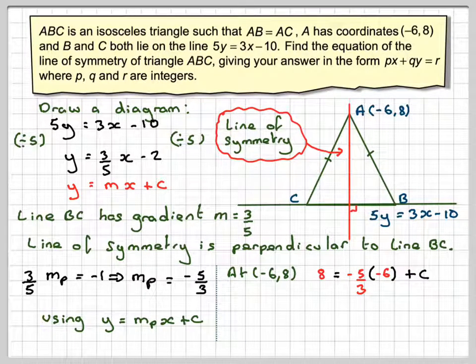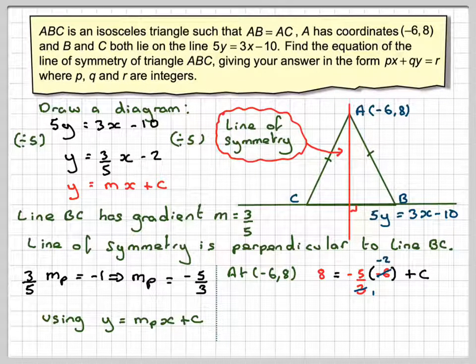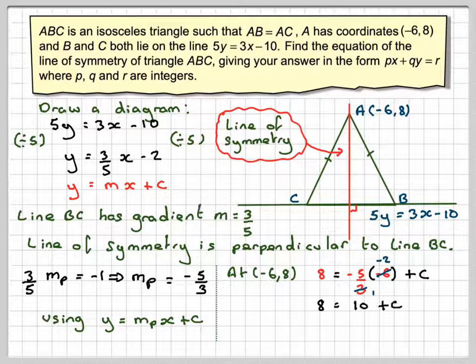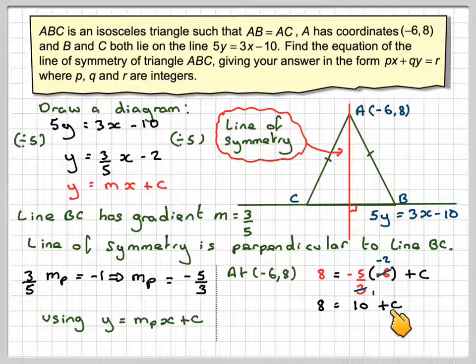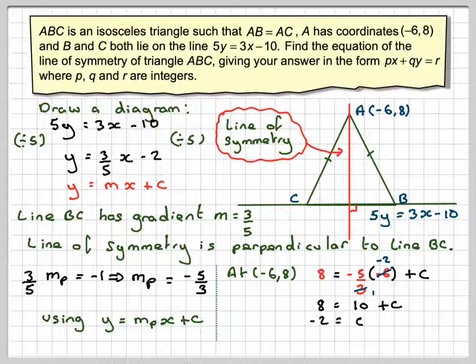The 3 and the -6 cancel, so we get -2. We're going to get that 8 = (-2)(-5), which is 10, plus C, which gives that C = -2.